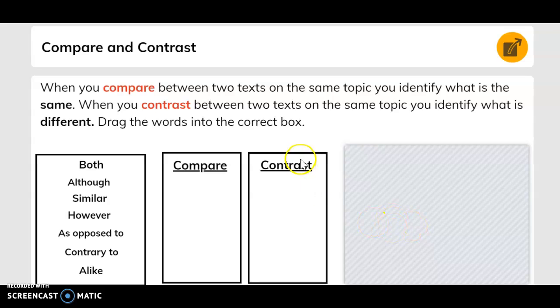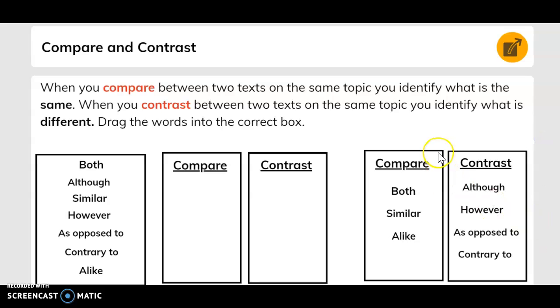Drag the words into the correct box. They're giving you both, although, similar, however, as opposed to, contrary to, and alike. Compare words are: both, similar, and alike. Contrast words are: although, however, as opposed to, and contrary to.